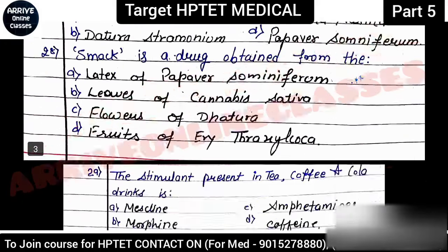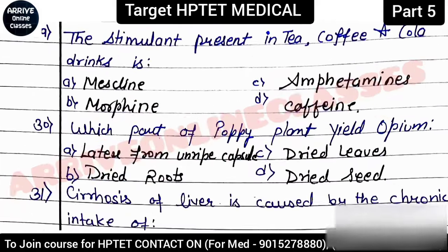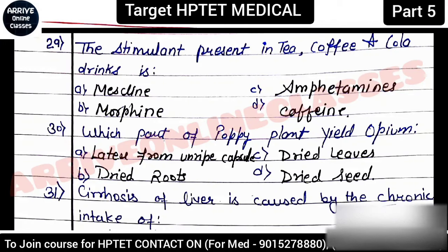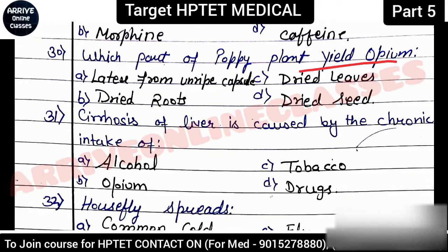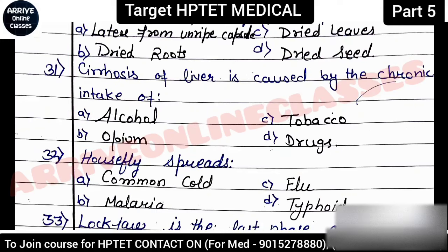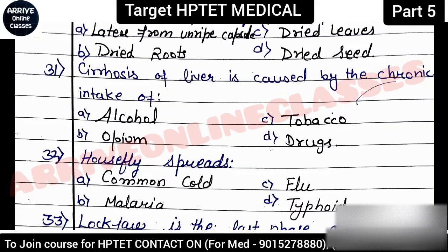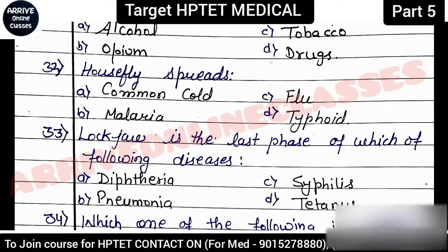Next question: 'The stimulant present in tea, coffee, and cocoa?' The common answer is caffeine. Next: 'Which part of the poppy plant yields opium?' Option A — the unripe capsule — is correct. This topic has appeared multiple times, confirming it is important. Next: 'Cirrhosis of the liver is caused by chronic intake of?' Alcohol, when taken for a long time, causes the liver to deteriorate — so alcohol is the correct answer.